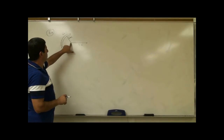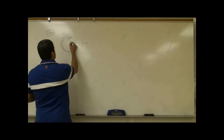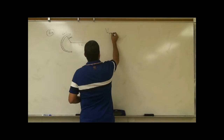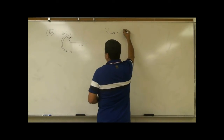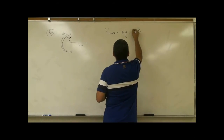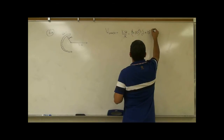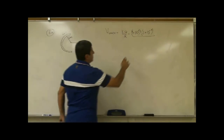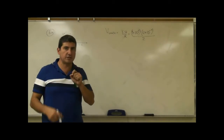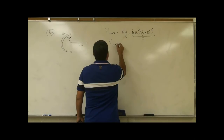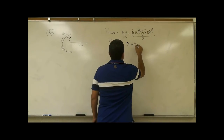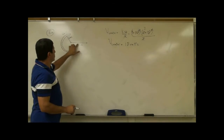Previously we've done problems where we find the potential the rod creates at the center. That one is pretty easy because the center is equidistant from the semicircle, so we just get KQ over R: 9 times 10 to the 9th times 4 times 10 to the minus 9, divided by 2. The potential at the center is 18 volts.